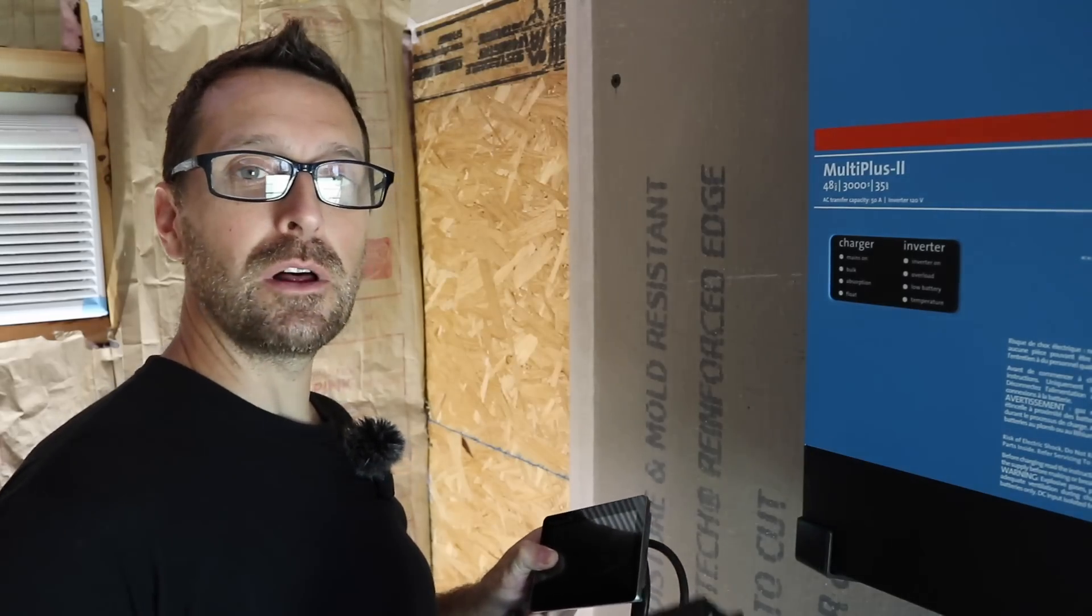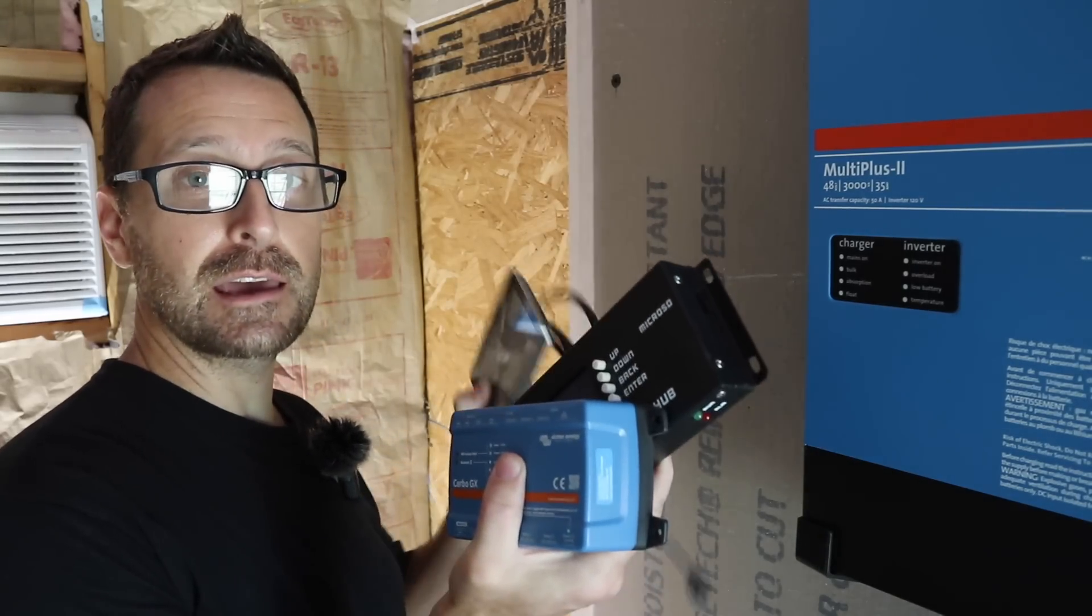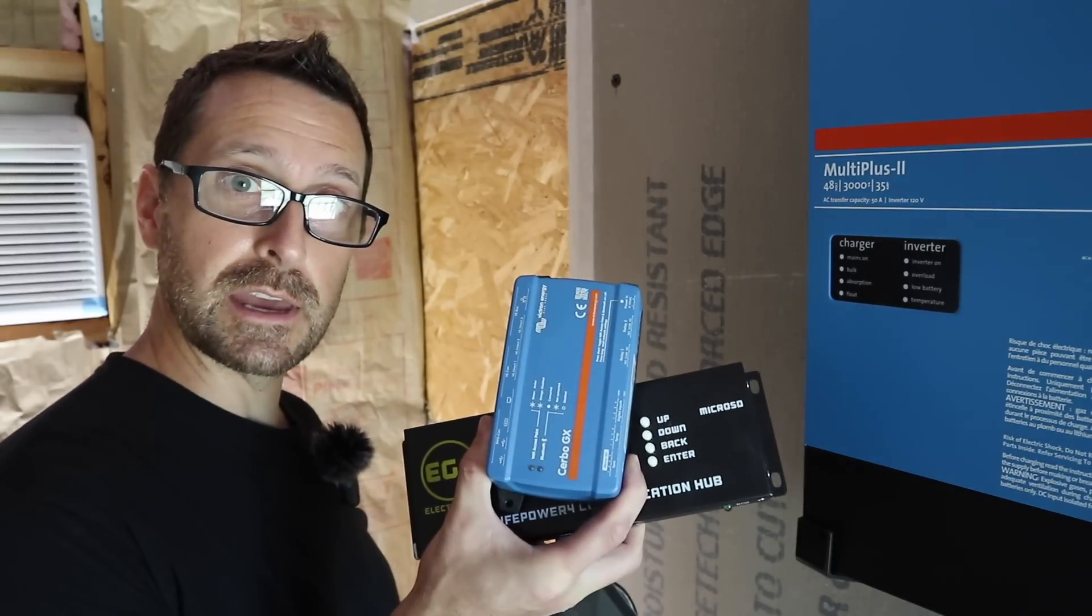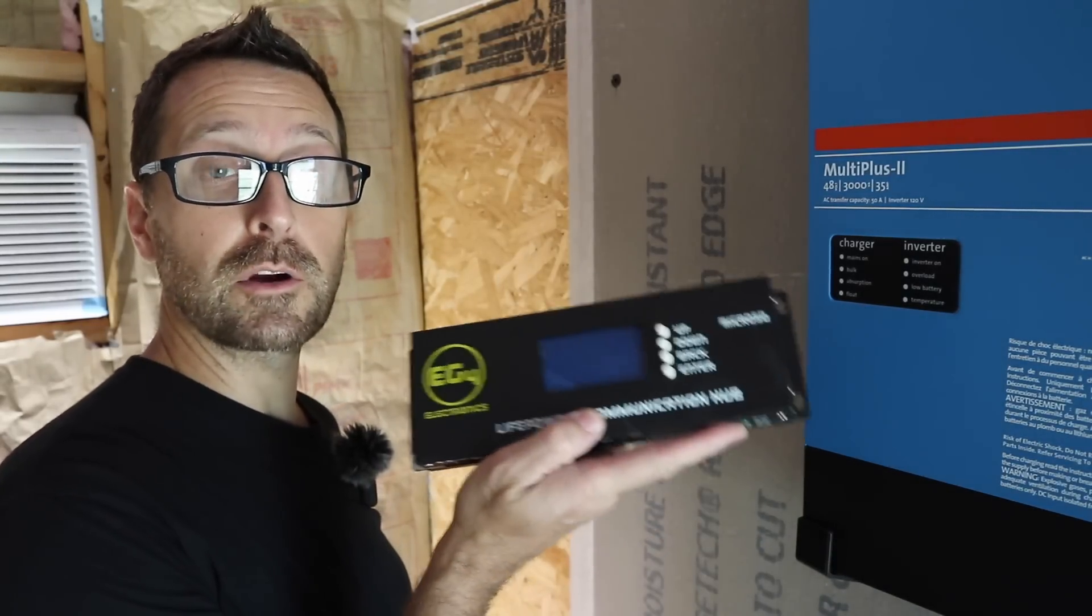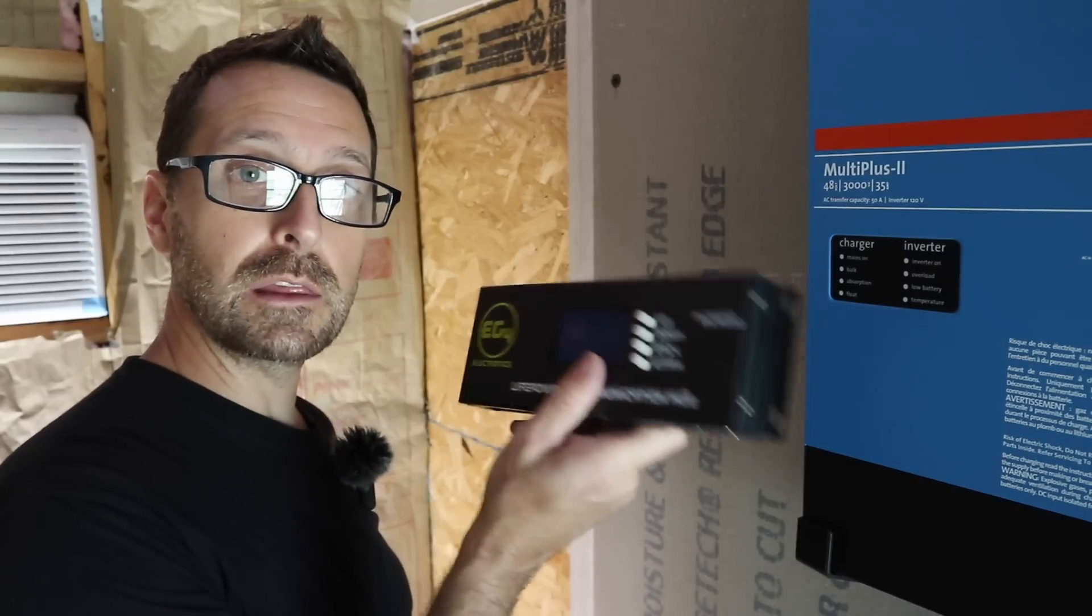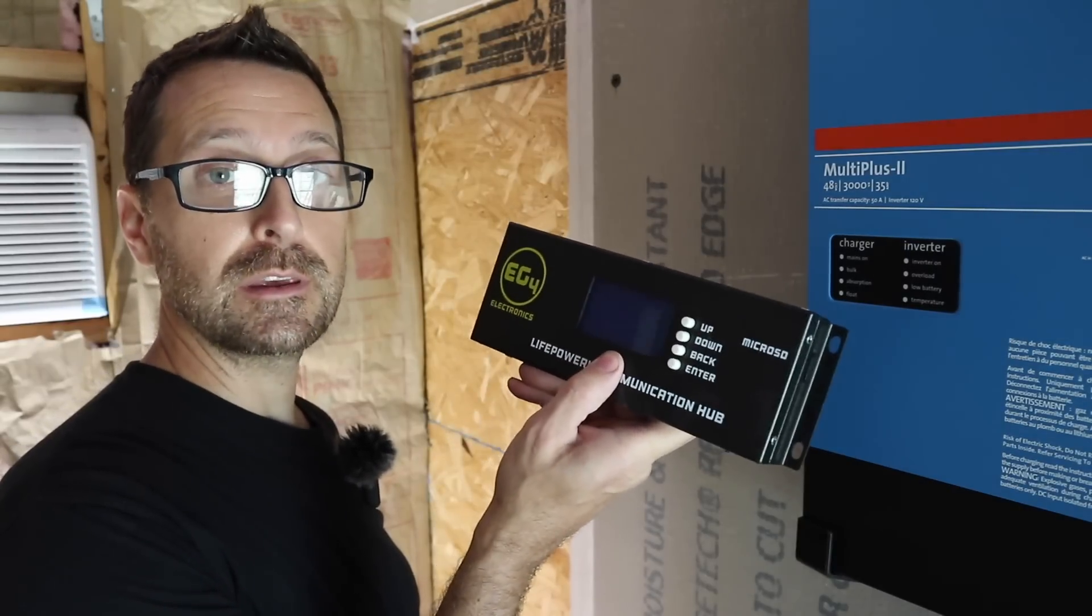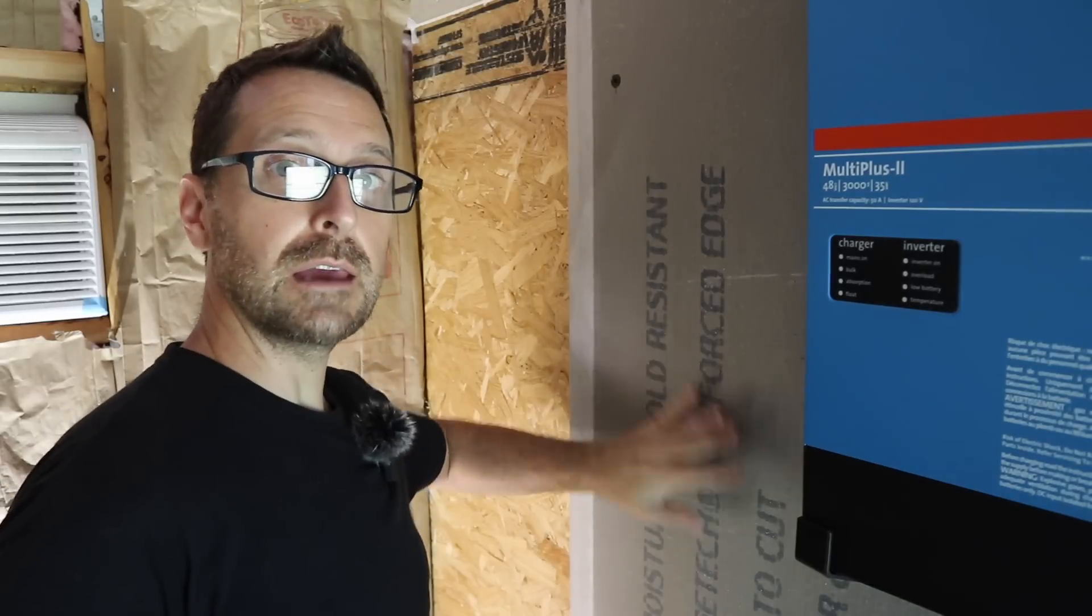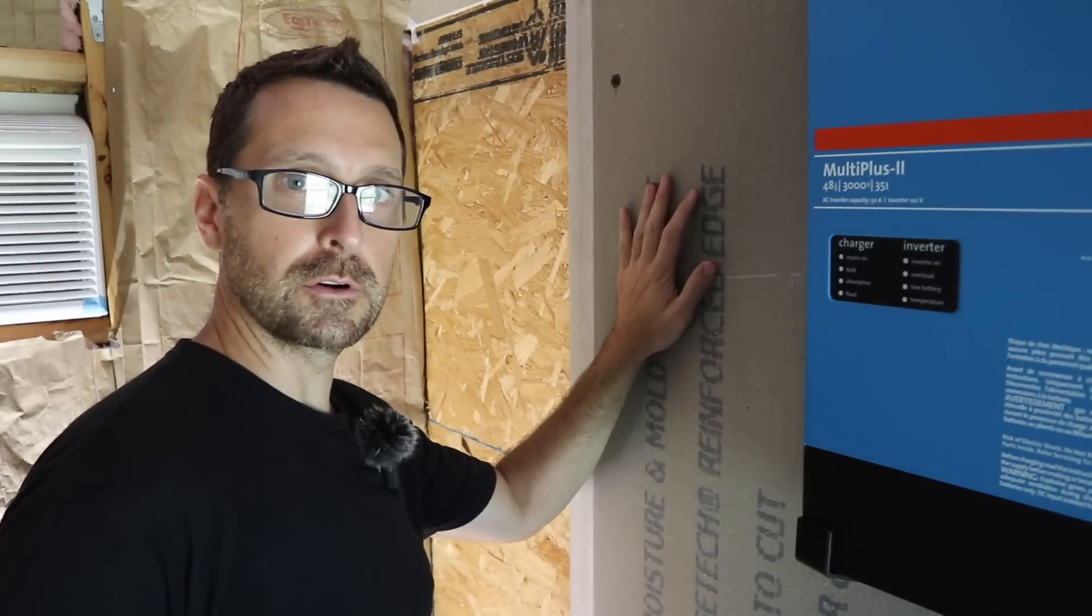The last thing we are going to mount to the wall are our communication devices and our interface. This is the Cerbo GX Touch, the Cerbo GX, and then the EG4 LifePower Communications Hub. Now this is only needed when you have the regular LifePower 4 batteries. If you have the LL version, you don't need this. We're going to mount them neatly on this space left on the wall next to our other inverter.